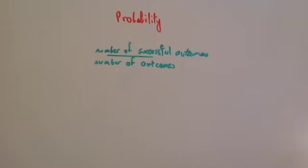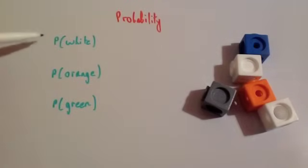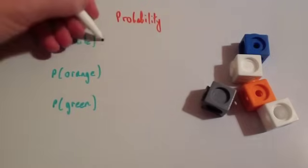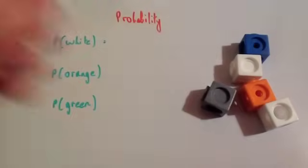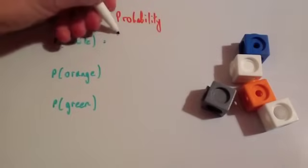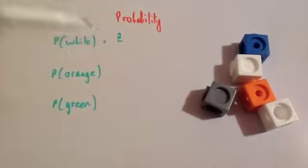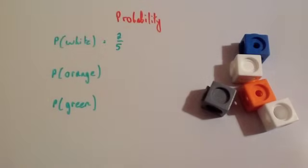Let's have a look at an example. Here we've got some cubes, and I'm going to choose one of them at random. If I was asked for the probability of a white — this is shorthand for probability of a white — it would be equal to the number of successful outcomes. Well, two of them are white, so two over the total number of outcomes. Altogether there's five cubes, so it's going to be two out of five, or two-fifths as a fraction.